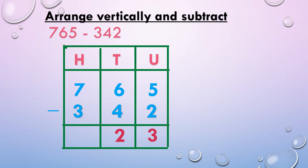6 tens minus 4 tens, we get 2 tens. 7 hundreds minus 3 hundreds, we get 4 hundreds. So 765 minus 342, we get 423. This is how we arrange the numbers vertically and subtract.